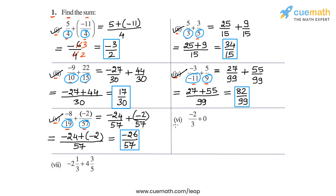Now we come to part 6, in which we have to calculate -2/3 + 0. If we add 0 to anything, we get the same number, because 0 is the additive identity for rational numbers. So -2/3 + 0 is simply equal to -2/3. So in part 6, the answer is -2/3.